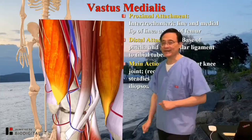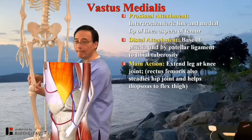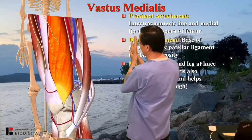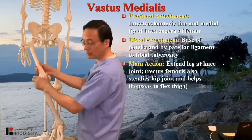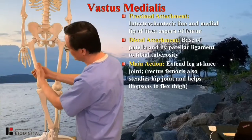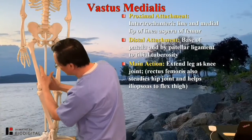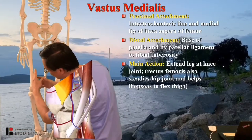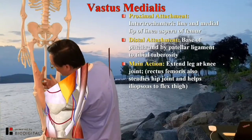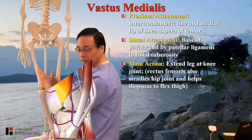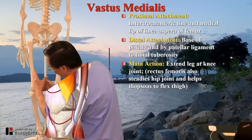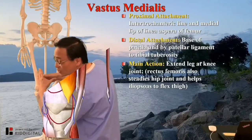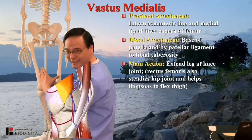The most important part is the VMO — Vastus Medialis Oblique. This muscle actually has two fiber orientations. Along the long axis of the bone, there is a longitudinal part and an oblique part. The oblique part is at about a 50 to 55 degree angle with the shaft of the thigh bone — that is the Vastus Medialis Oblique, and the other is the Vastus Medialis Longitudinal.